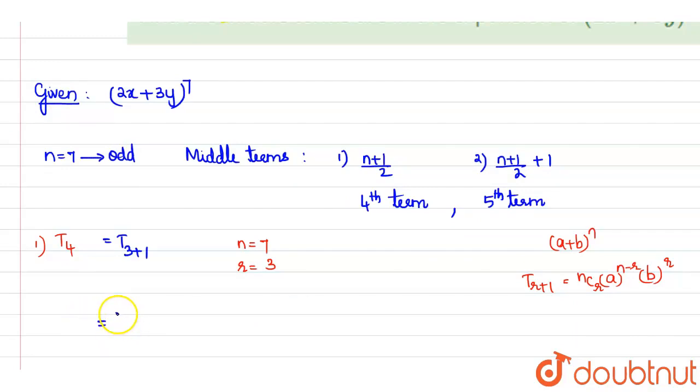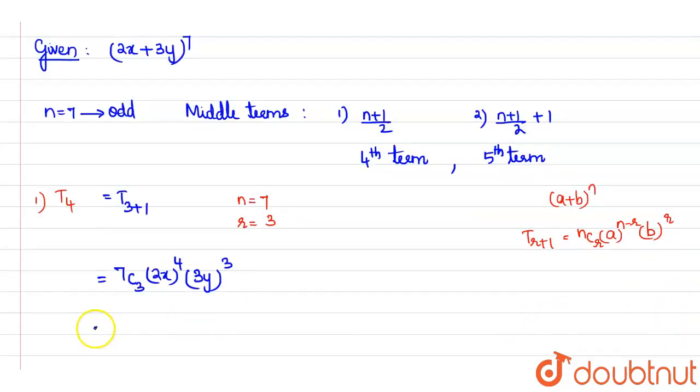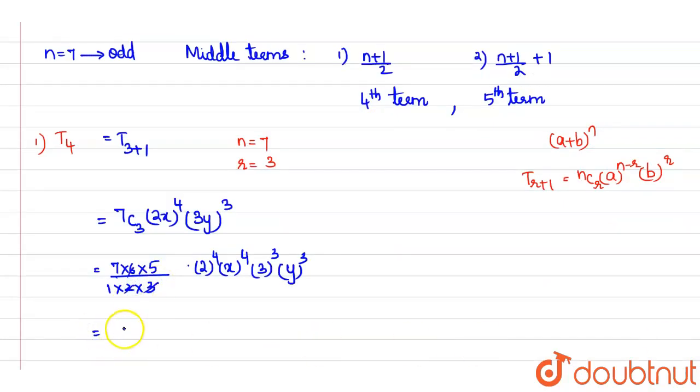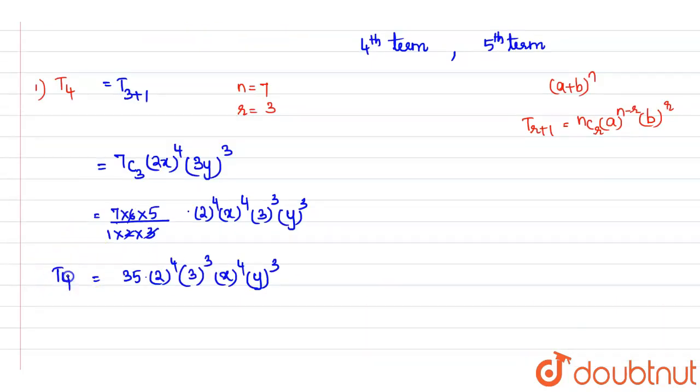Therefore T4 is equal to 7C3 × (2x)^4 × (3y)^3. Now this can be given as equal to 7C3 means it is (7×6×5)/(1×2×3) × 2^4 × x^4 × 3^3 × y^3. Now this can be simplified as equal to 35 × 2^4 × 3^3 × x^4 × y^3. This is the expression for t4.